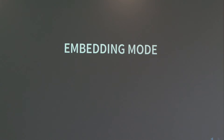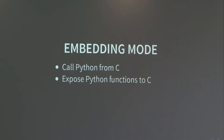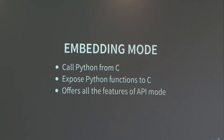Now embedding mode — it's when you have an existing C codebase and you want to add Python to it. You can just expose Python functions to C. You just need to add a declaration on top of those functions specifying the types, and then that function will be callable from C. Otherwise it's exactly the same as API mode. I didn't add an example because it's Sunday morning and I didn't want to put too much C in. The two most important modes are ABI and API.